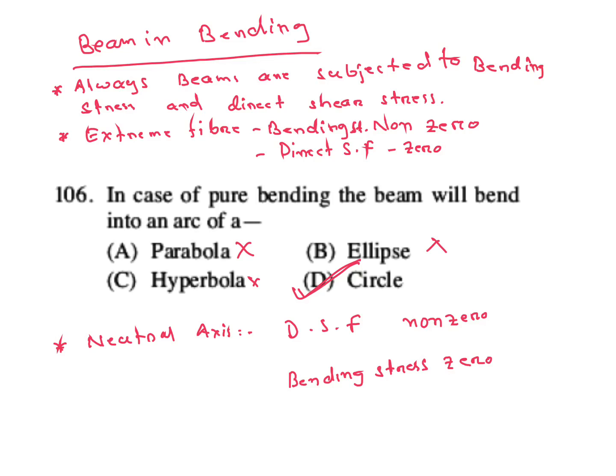In case of neutral axis, direct shear stress at neutral axis is non-zero and your bending stress is zero. In case of beams in bending, at extreme fiber bending stress is non-zero but direct shear stress is zero. And at neutral axis, your direct shear stress is non-zero, bending stress is zero. This is very important.